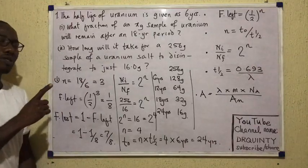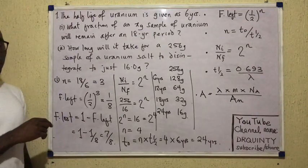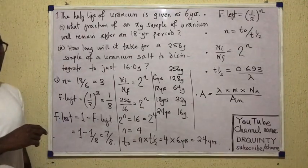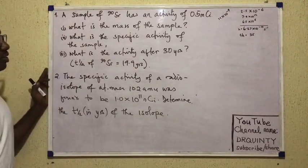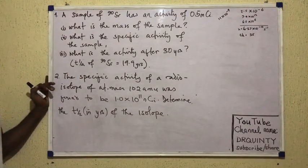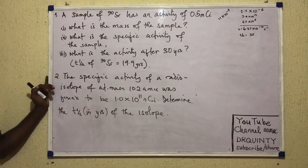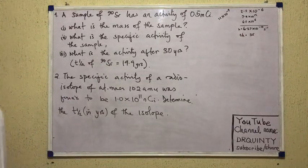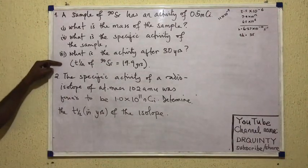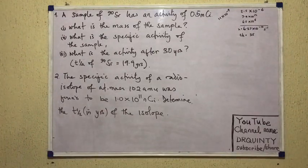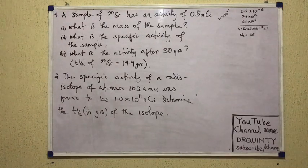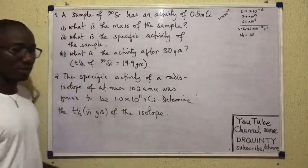We are done with this question. You may pause the video to look through the solution again, after which you can play it to see what the next question would be — a question on activity. Now for activity, we have two questions on the board. One says a sample of strontium-90 has an activity of 0.5 millicurie. What is the mass of the sample? What is the specific activity of the sample? And what is the activity after 30 years? We are given the half-life of strontium-90 as 19.9 years. The second question: the specific activity of a radioisotope of atomic mass 102 AMU was found to be 1.0×10¹¹ nanocurie — determine the half-life in years.